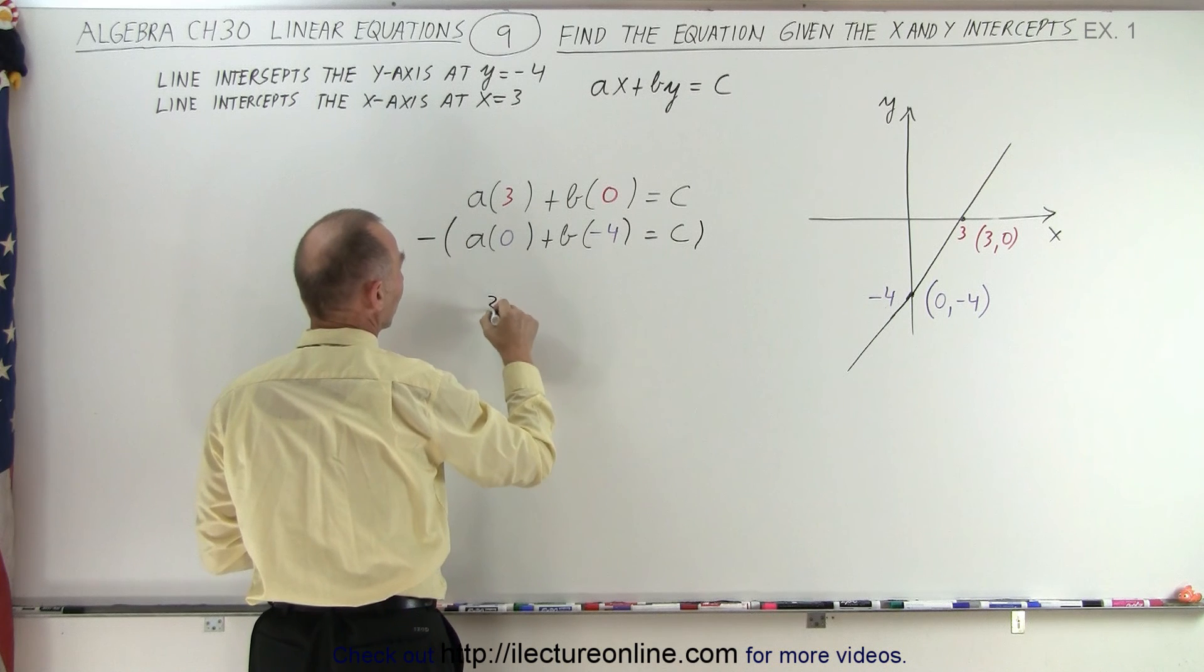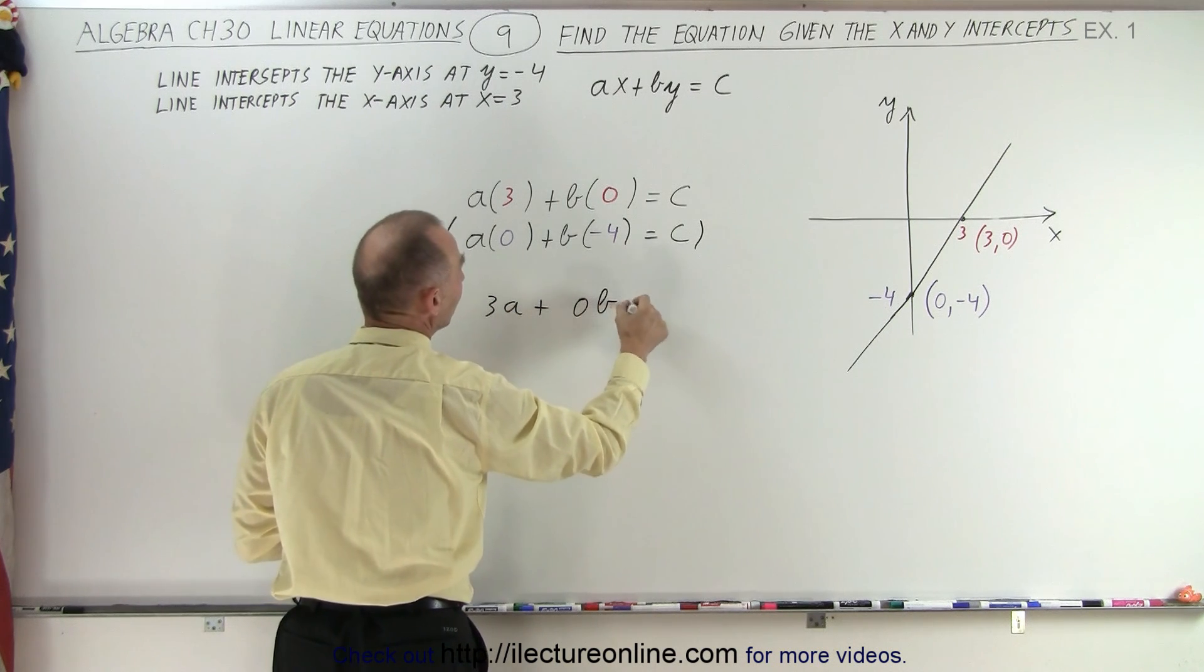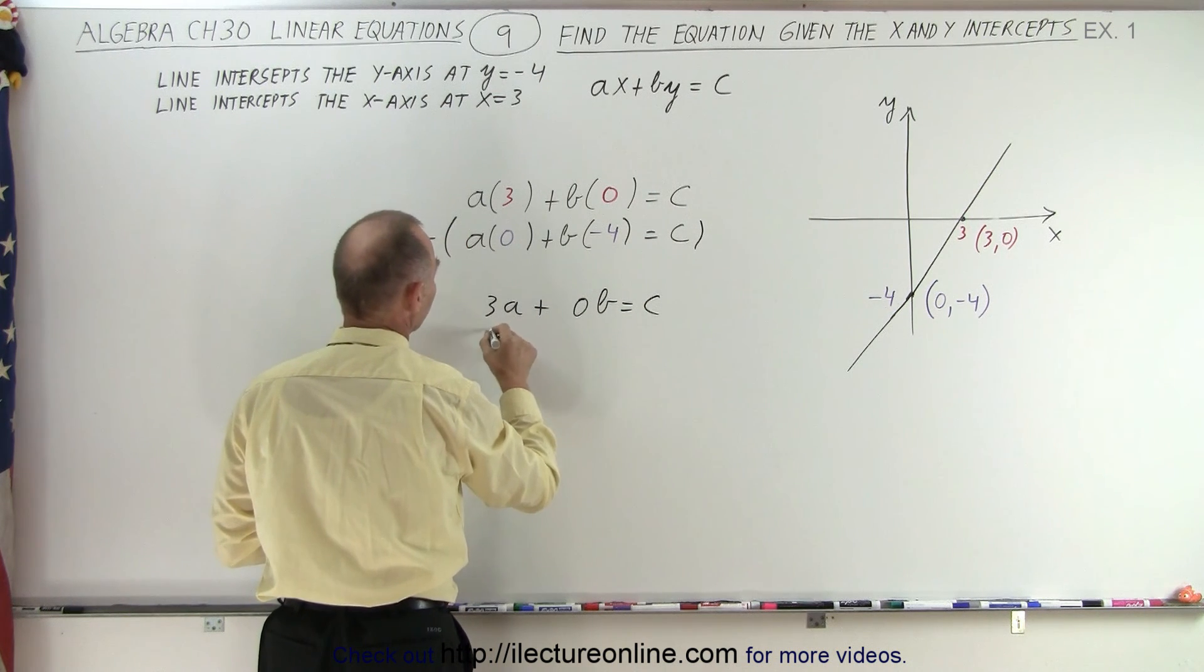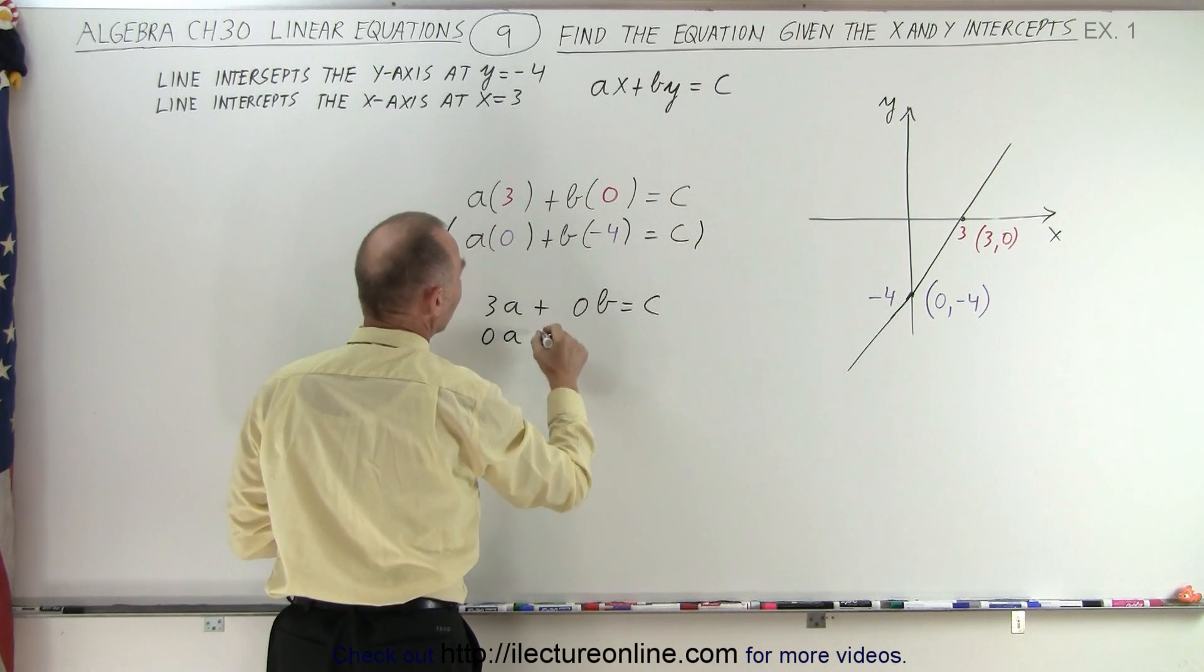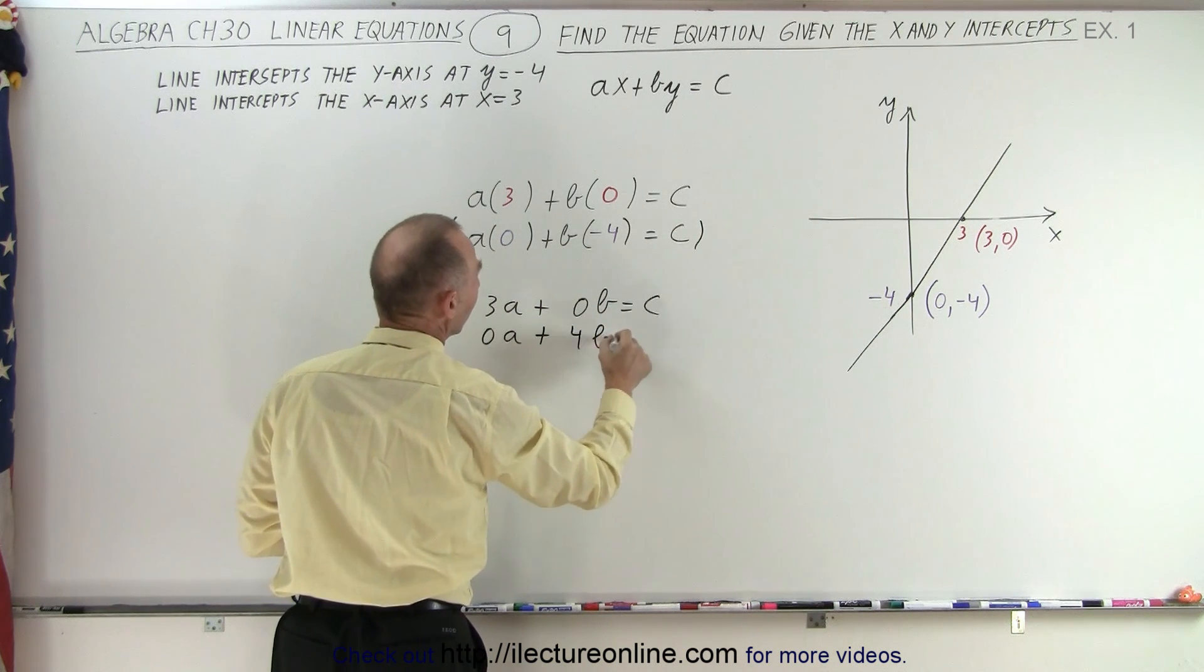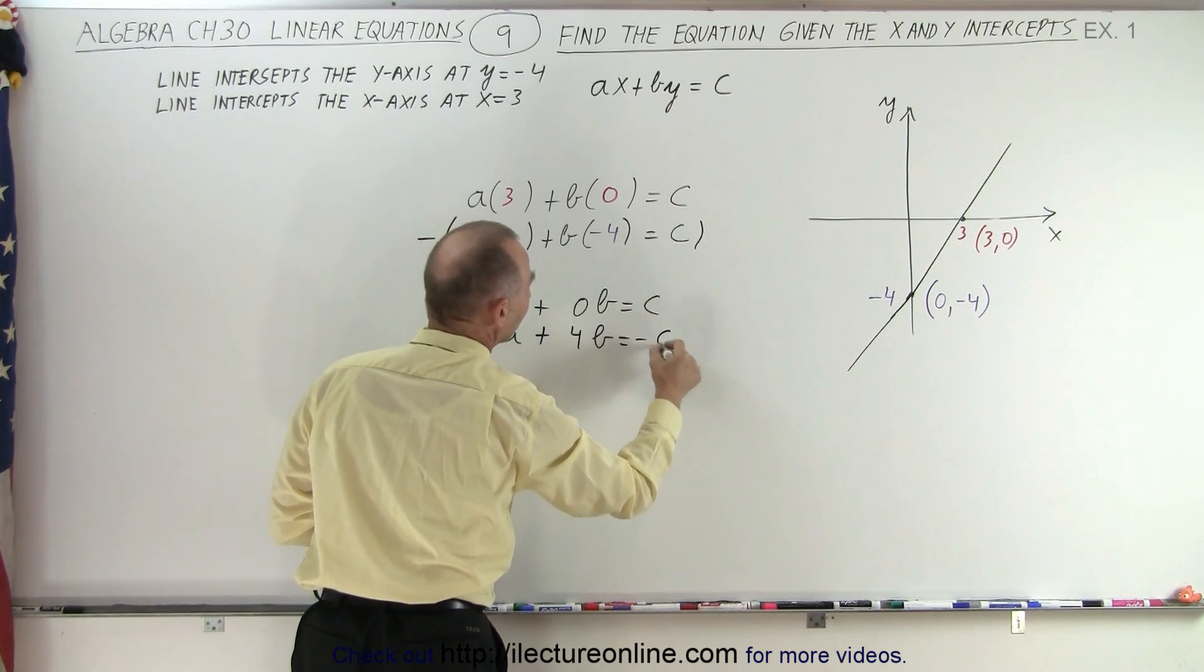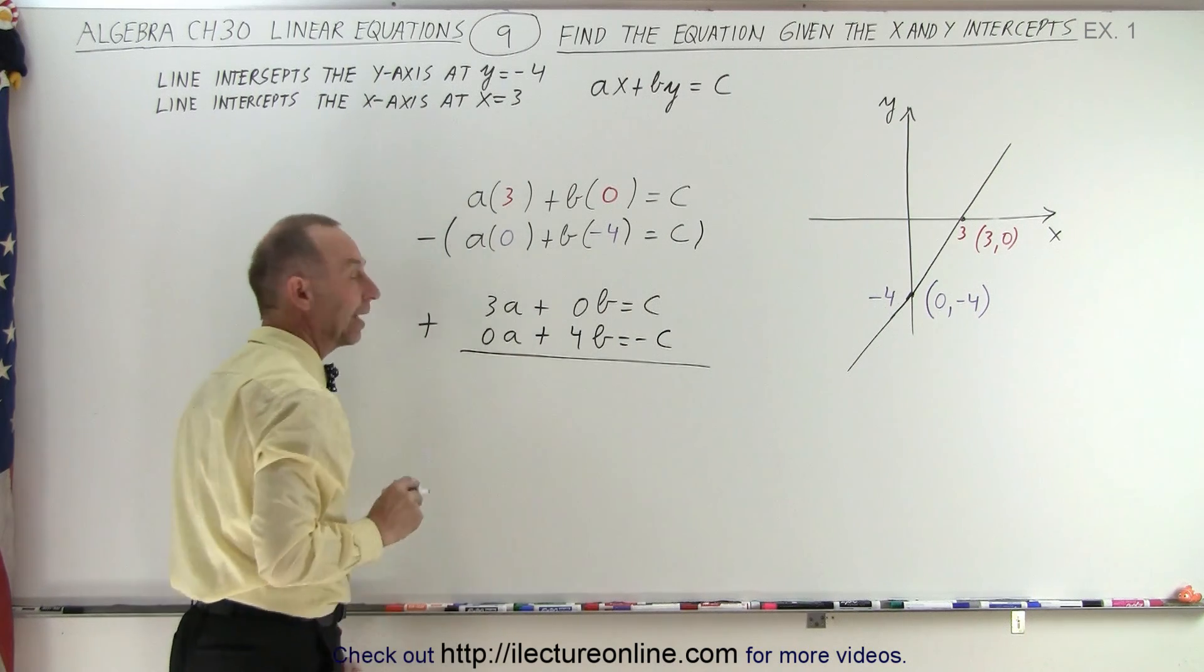So, let's do that. We get 3a plus 0b equals c. And here we get 0a and minus times minus 4b gives us plus 4b is equal to negative c. And now we can add the two equations, which makes it a little bit easier.